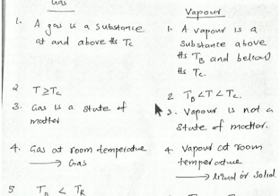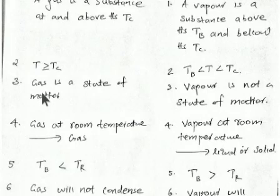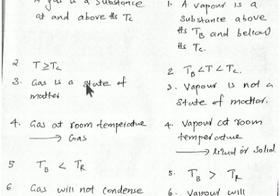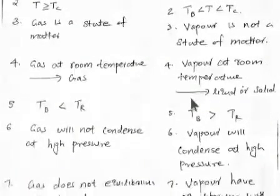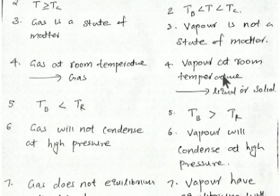A gas is a state of matter. There are five states of matter: solid, liquid, gas, plasma, and Bose-Einstein condensate. Gas is one of these five states. Vapor, however, is not a state of matter. Gas at room temperature is always a gas.